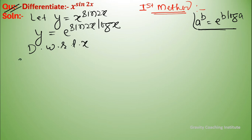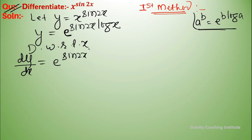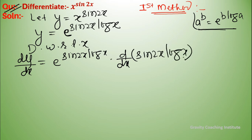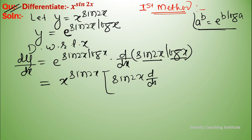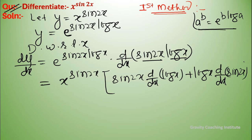Now differentiate with respect to x. dy/dx equals e to the power sin 2x log x, and then differentiate the exponent sin 2x log x using the product rule. This gives x to the power sin 2x into the derivative of sin 2x log x.